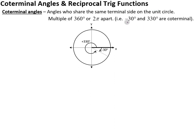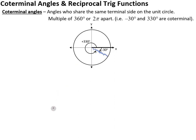So for example, look at the example here: negative 30 degrees — if we went 30 degrees in the negative direction — and positive 330 would end in the same place. That terminal side is the same, so we'd say they are co-terminal.